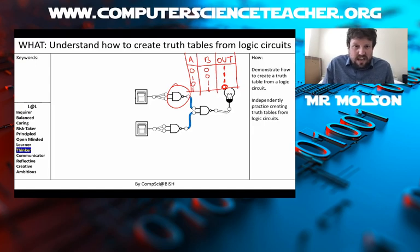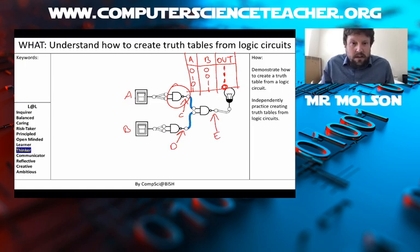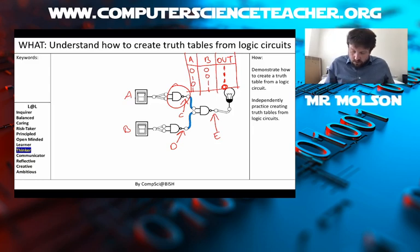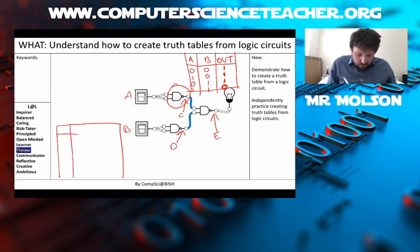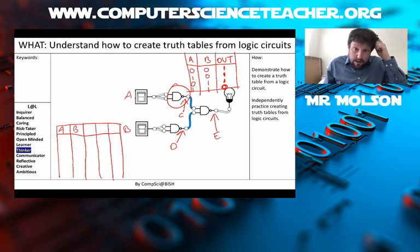The second step was to add labels. So I'm gonna label input A, input B. The output here is going to be C, the output here is going to be D, and my final output I will label as E. That was A in my mnemonic — add the labels. Now going to B, which is to build my truth table. I need a column for both inputs — a column for A and a column for B — and then columns for my outputs: C, D, and E.